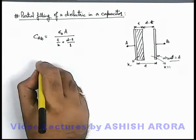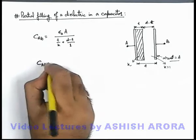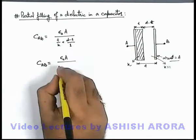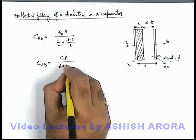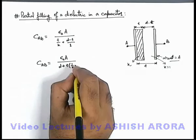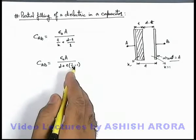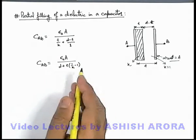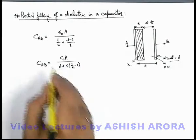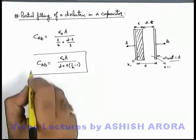So in this situation, the capacitance across the terminals A and B for partial filling we can write as epsilon not A divided by d plus t multiplied by 1 by k minus 1, or we can write d minus t times 1 minus 1 by k. In either way you can keep the result. So in this situation, this is the capacitance which we are getting.